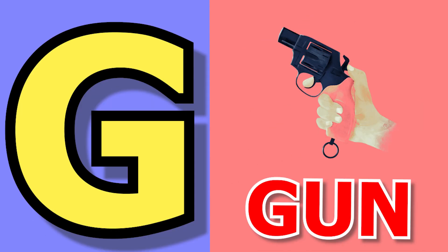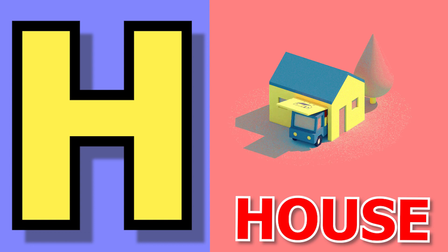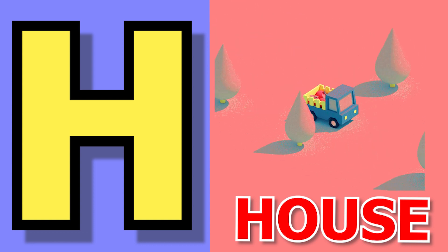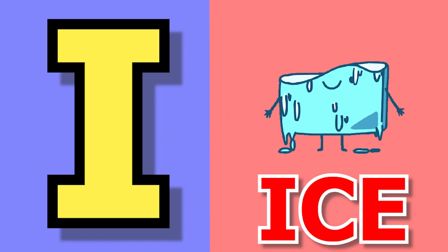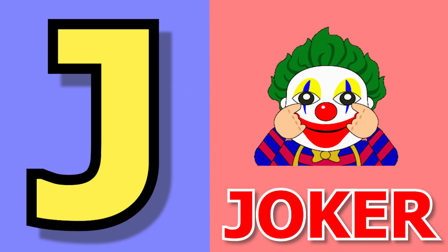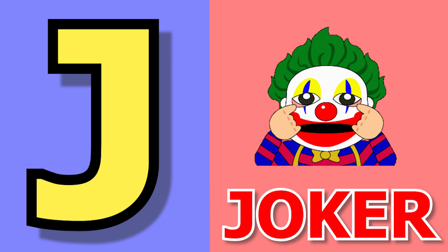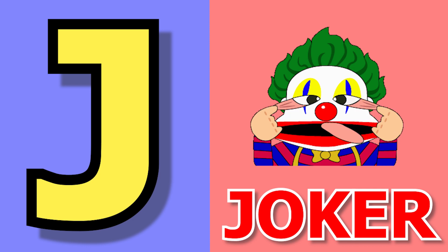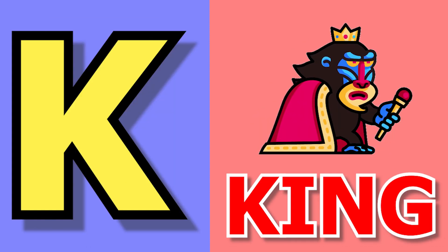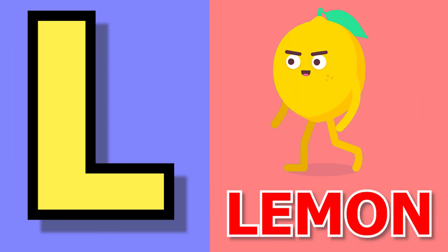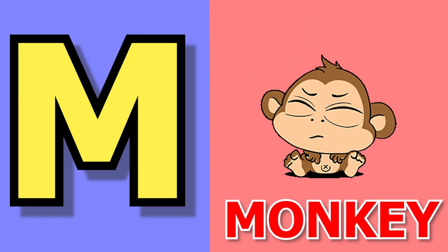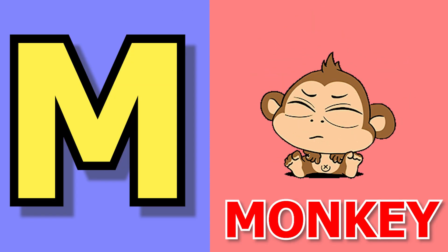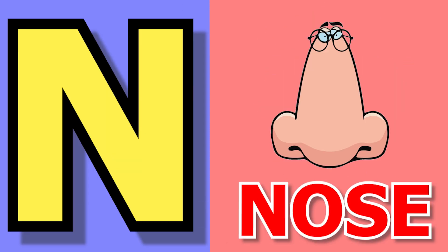G for gun, H for house, I for ice, J for joker, K for king, L for lemon, M for monkey.